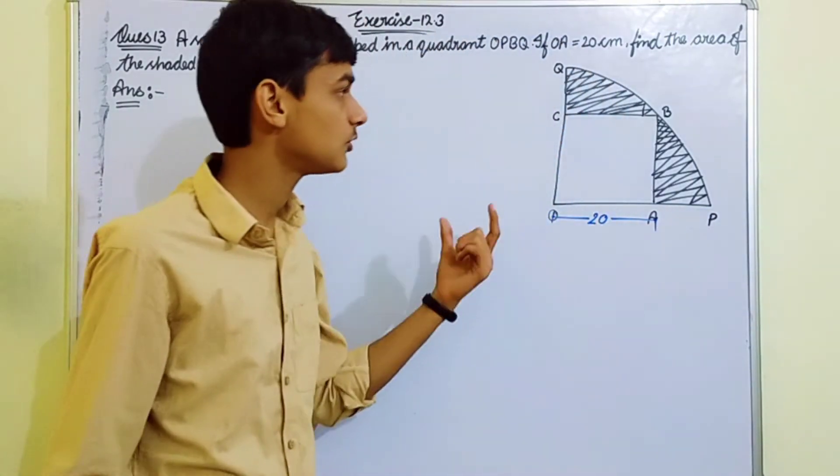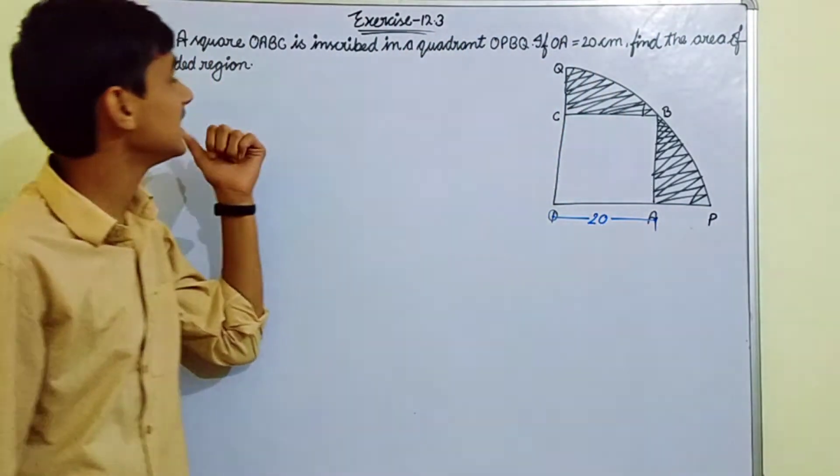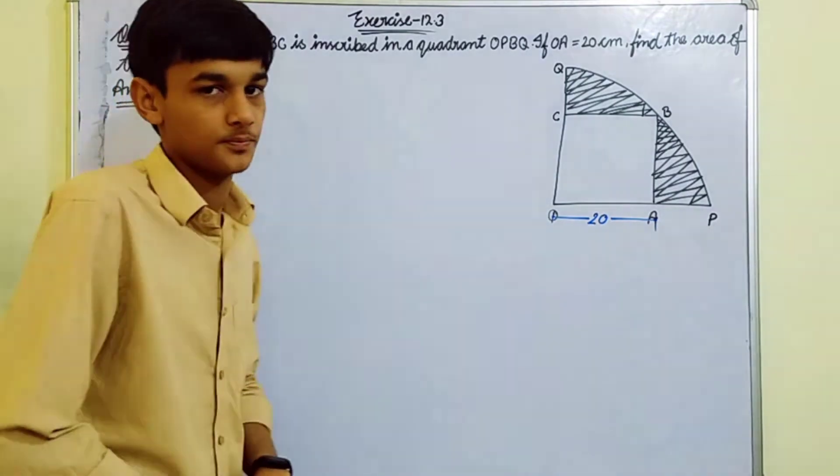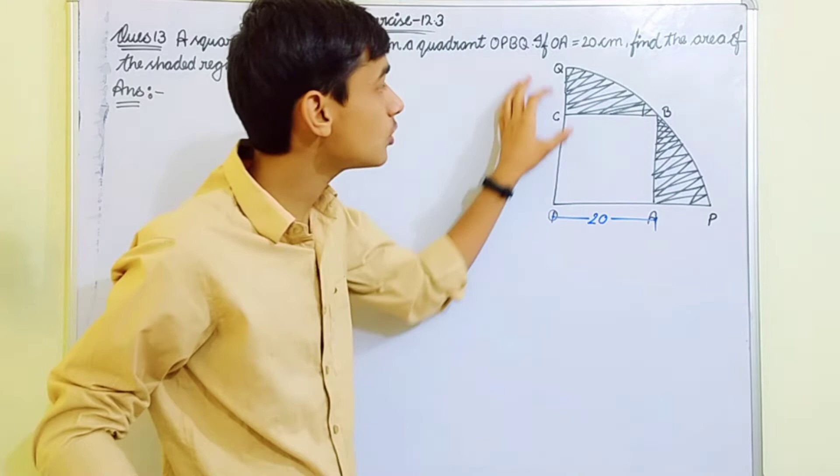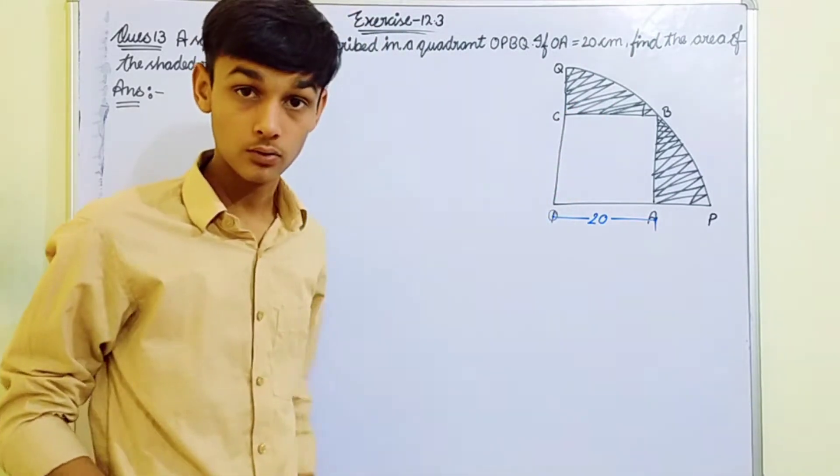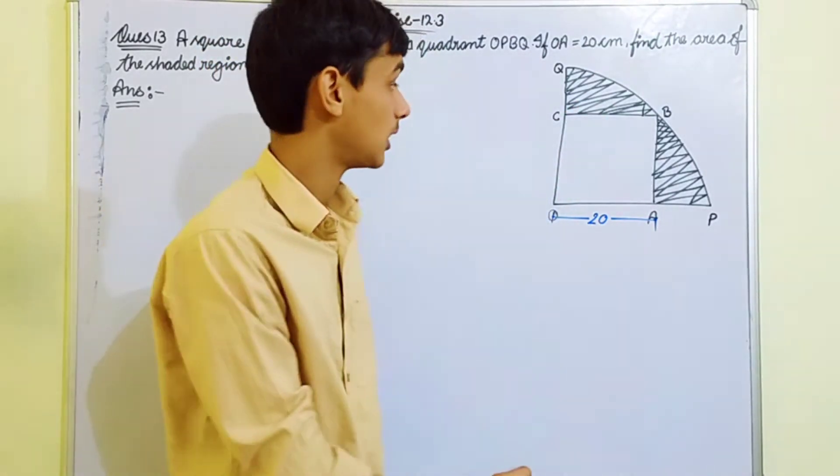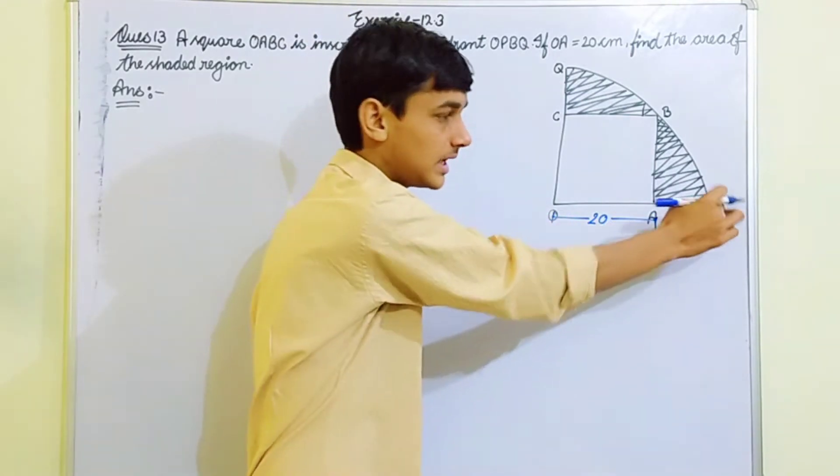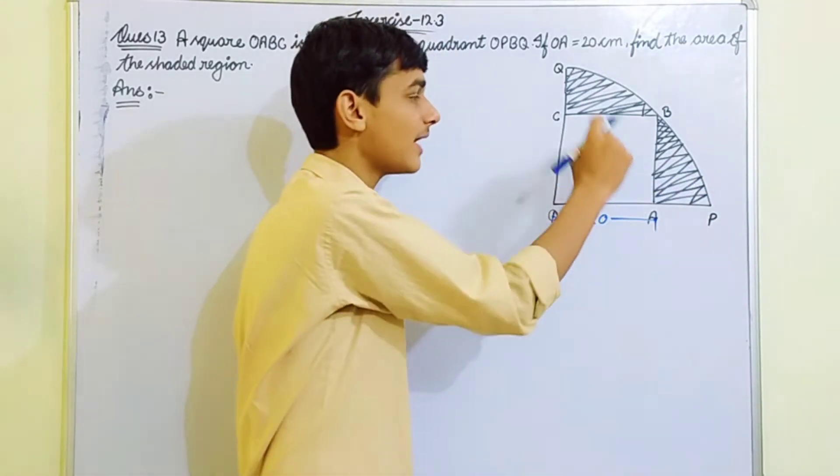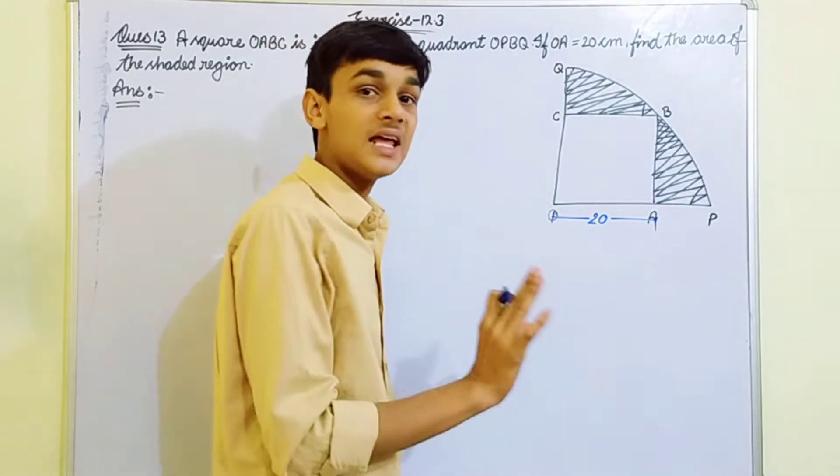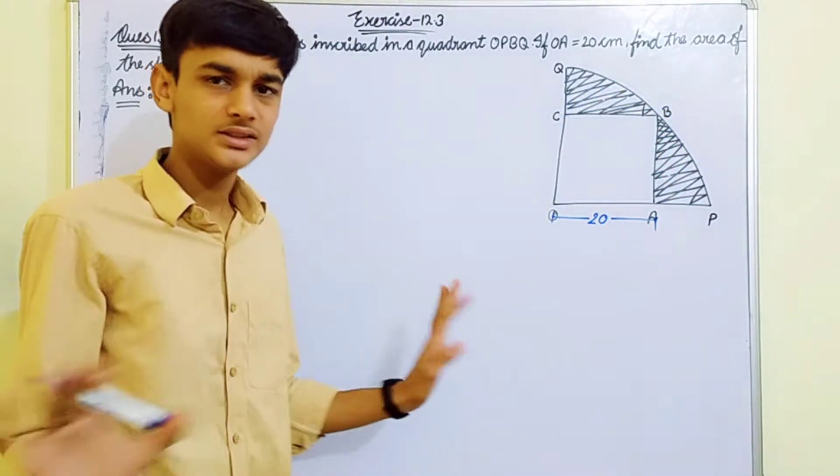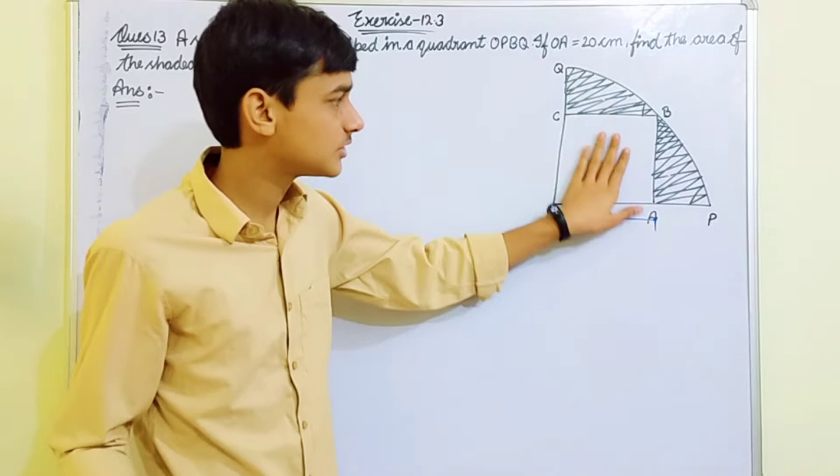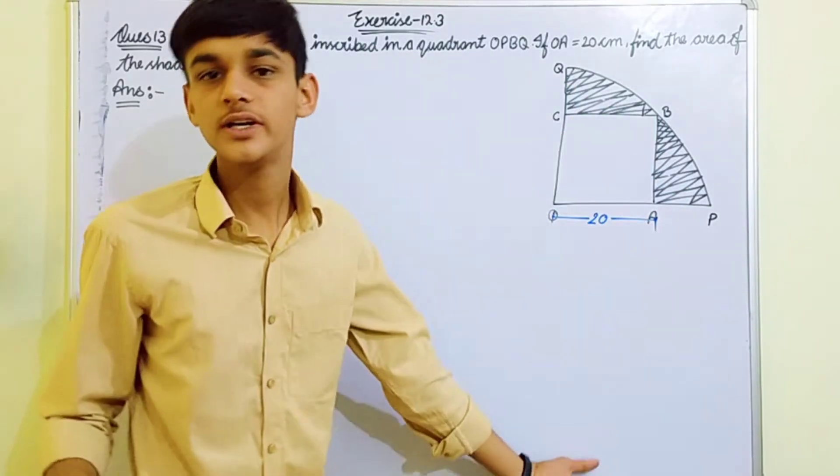It's given as 20 cm. Find the area of the shaded portion. The square's side is given and we need to find out the shaded portion's area. First, we'll find the quadrant's area, then find the area of the shaded portion.